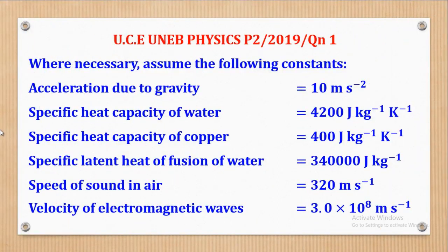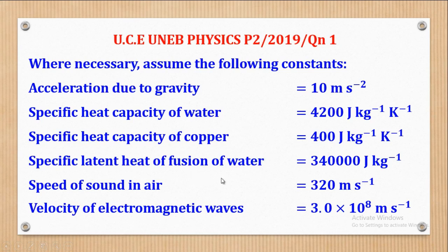Here are the constants that will be used: acceleration due to gravity 10 m/s², specific heat capacity of water 4200 J per kg per kelvin, specific heat capacity of copper 400 J per kg per kelvin, specific latent heat of fusion, speed of sound in air, and velocity of electromagnetic waves. All these are constants and can be used where necessary.